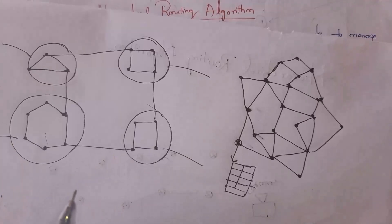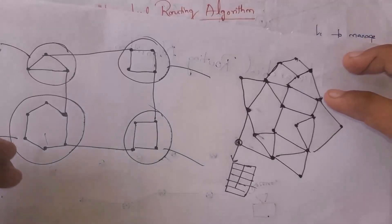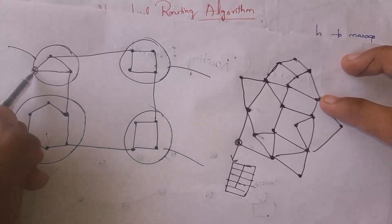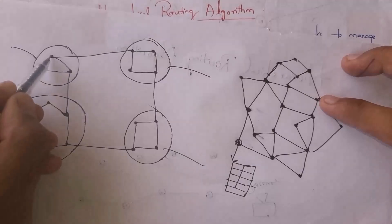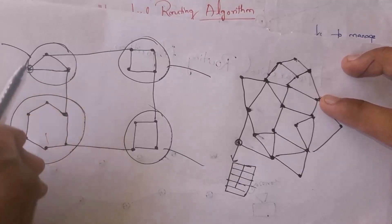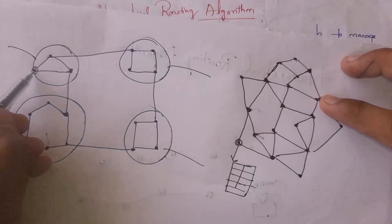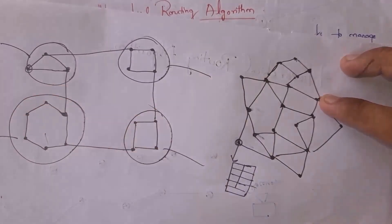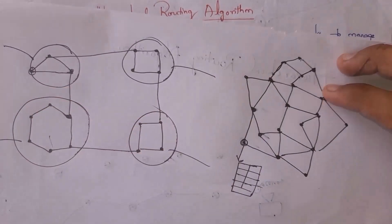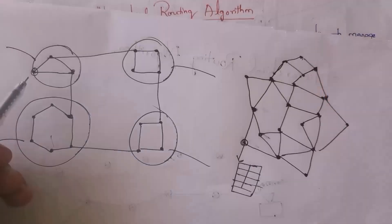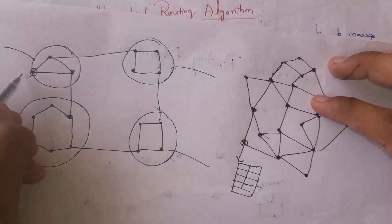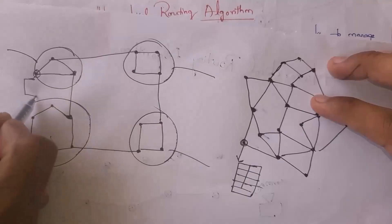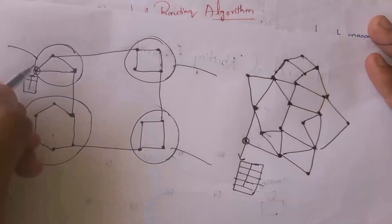In hierarchical routing, the big network is divided into smaller regions. So each router does not need to maintain information about all other regions. For example, a router only needs to maintain information about routers within its own region. It does not need to maintain information about routers in different regions, so the size of the routing table is very small.